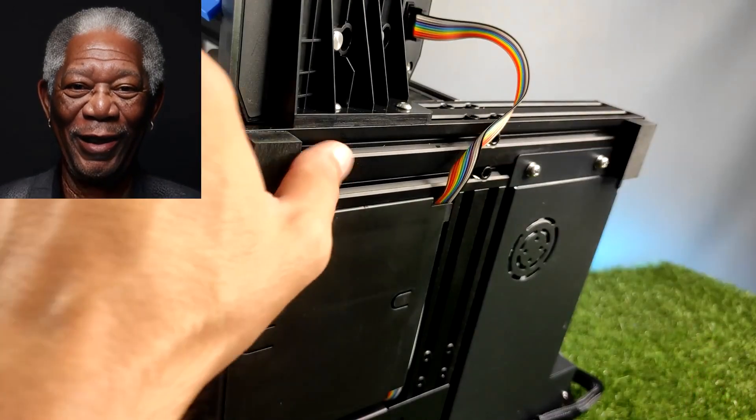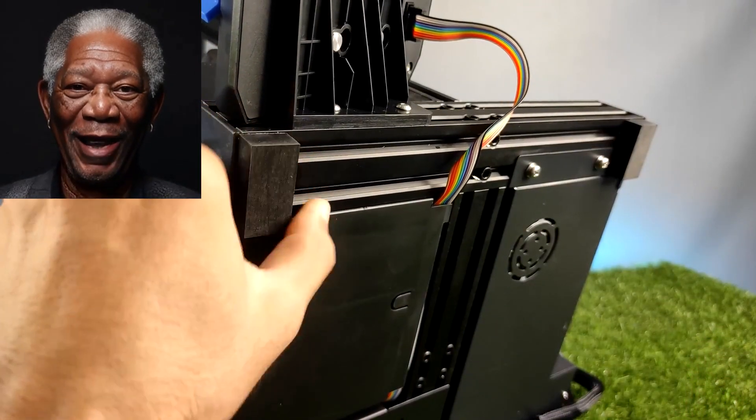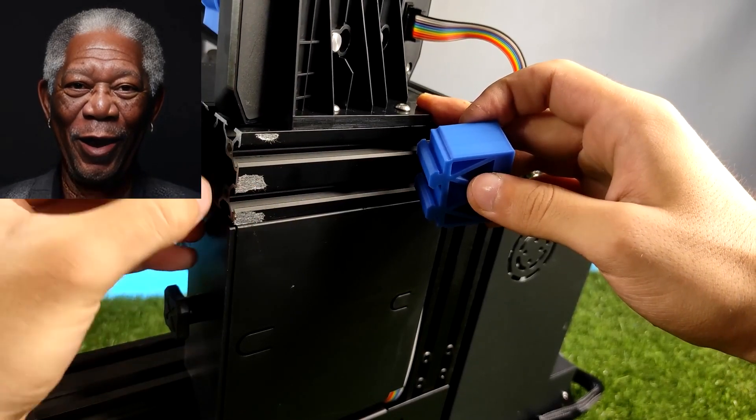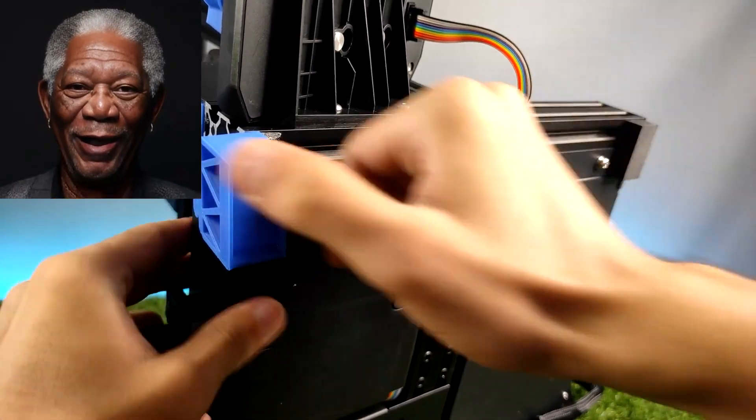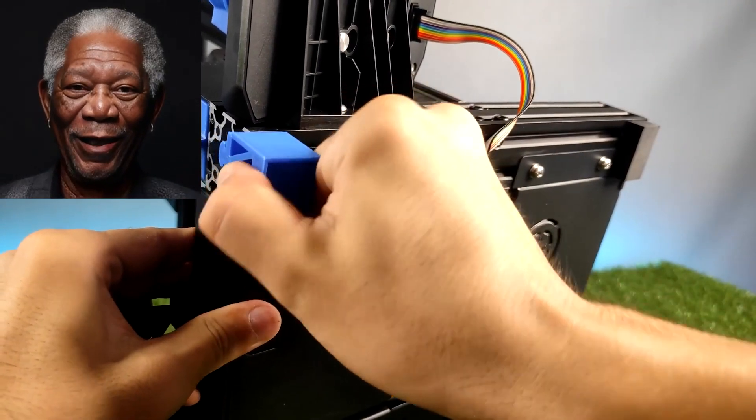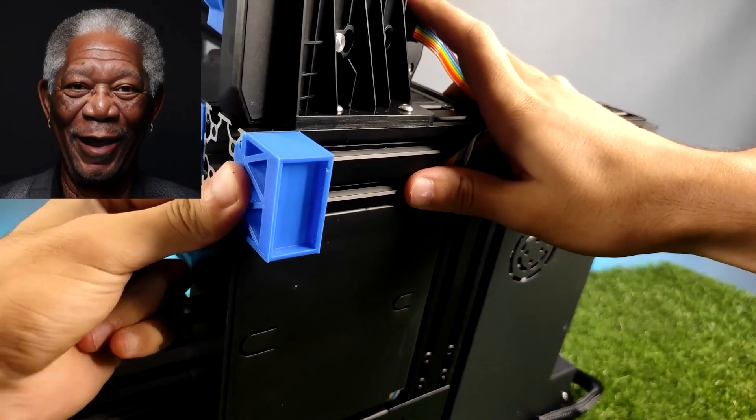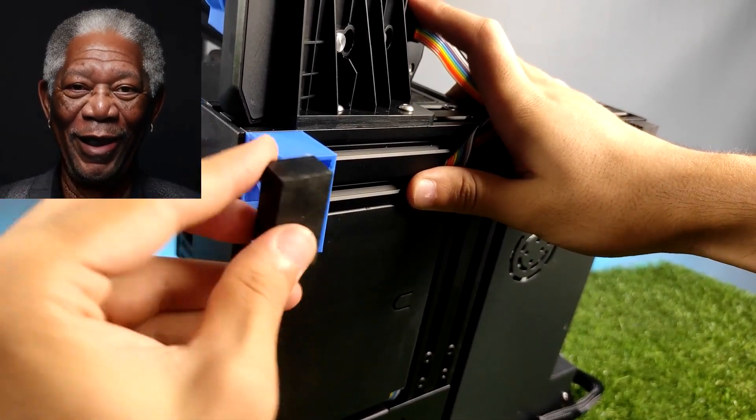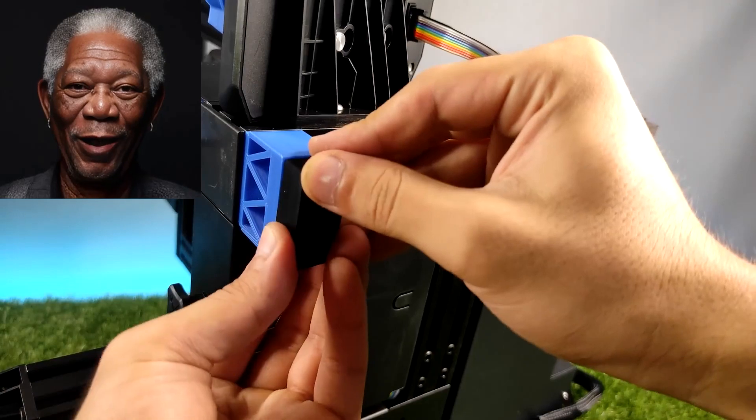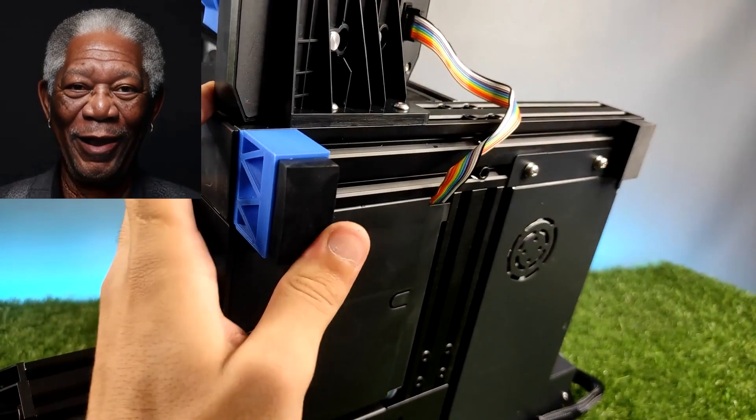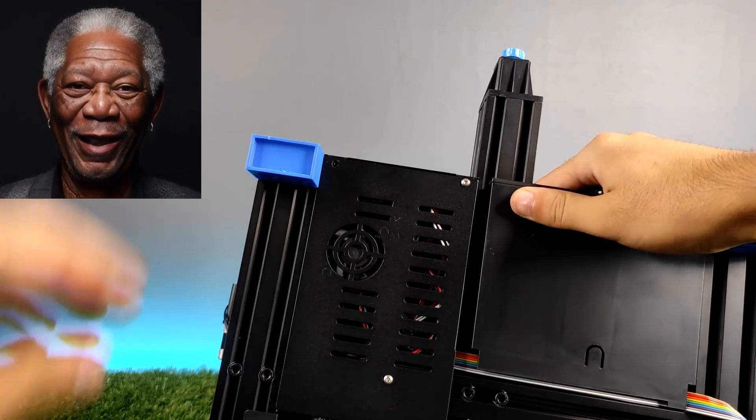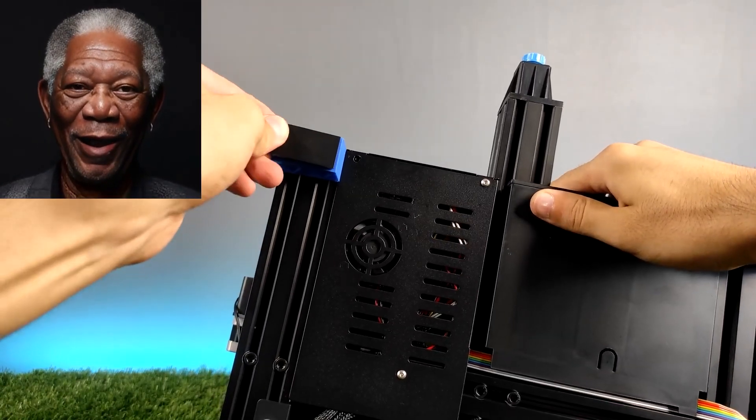Adding riser feet to raise the height of your Ender 3v2 not only enhances its appearance, but also provides much-needed clearance for upcoming upgrades. The added height improves stability during prints, reducing the risk of vibrations and ensuring smoother, more precise movements. This translates to better print quality, especially for larger and more intricate models.